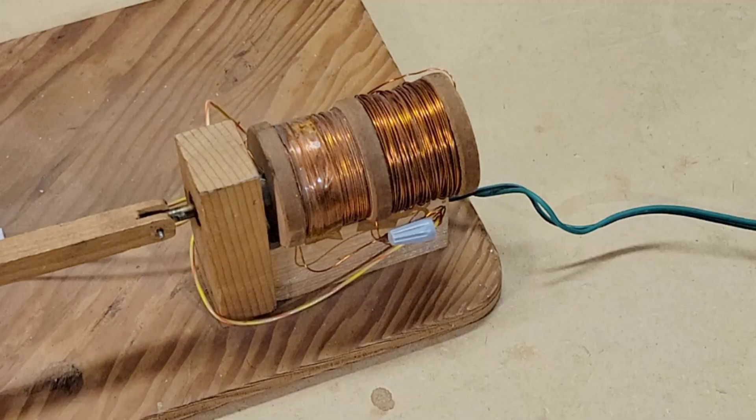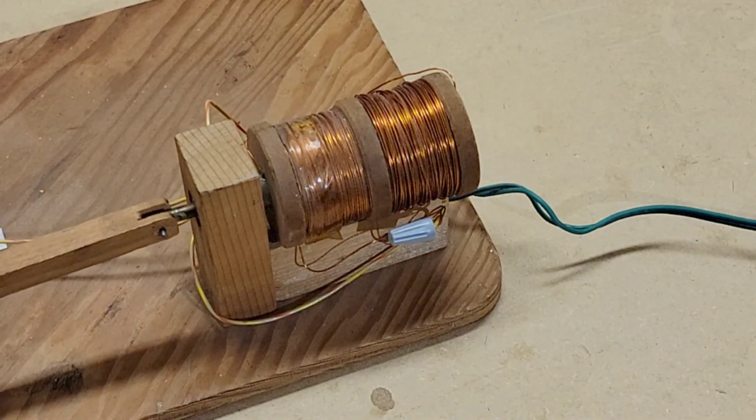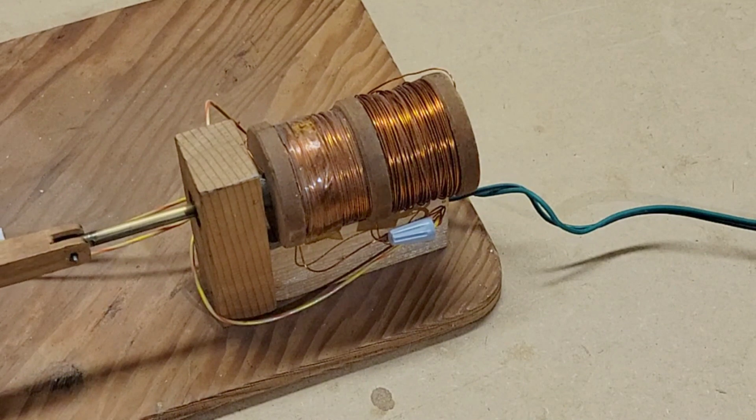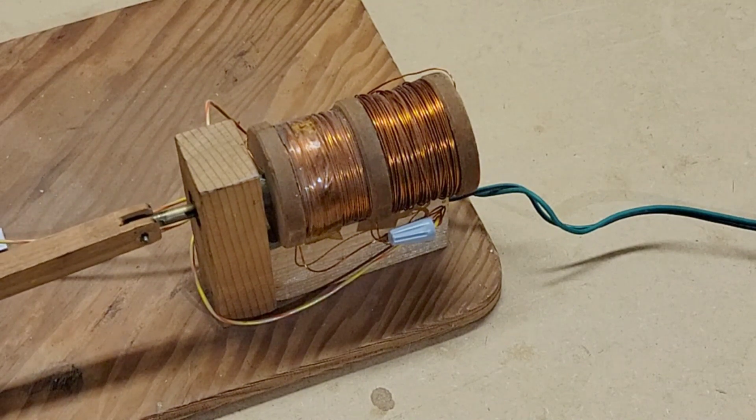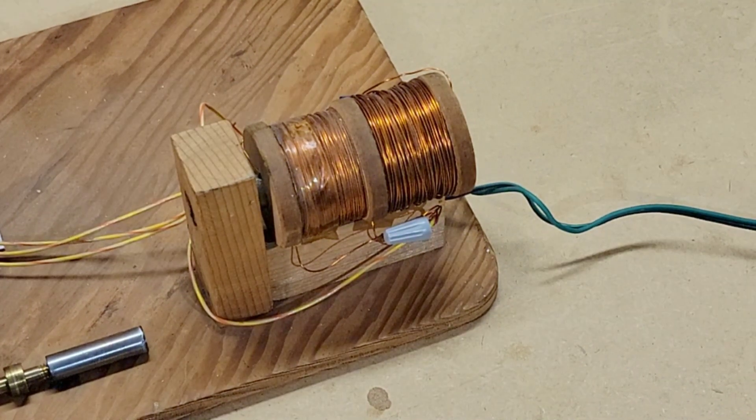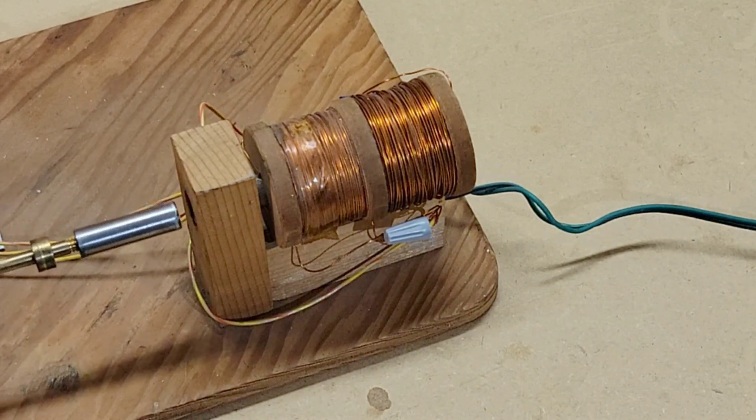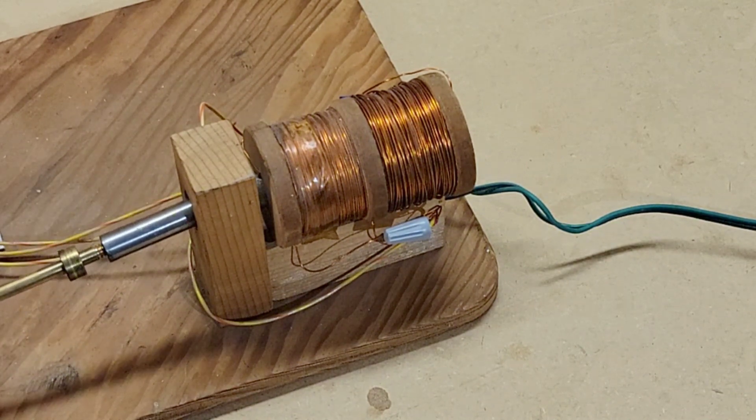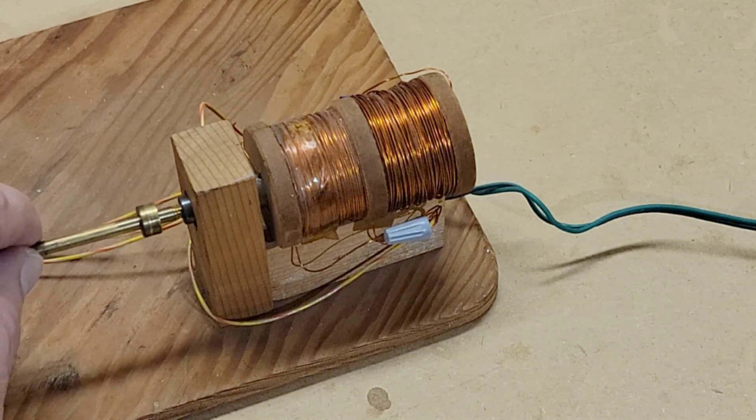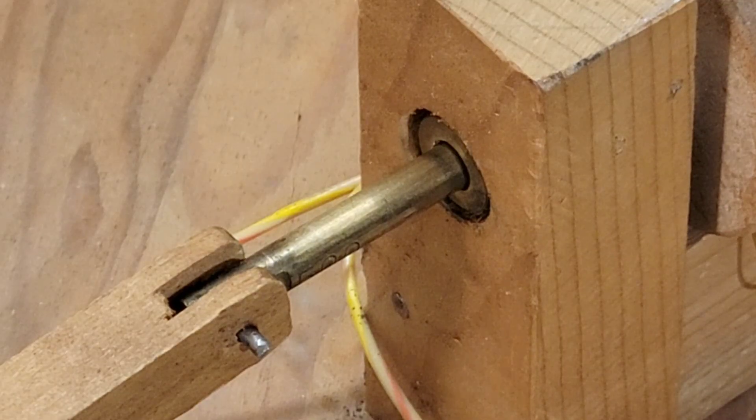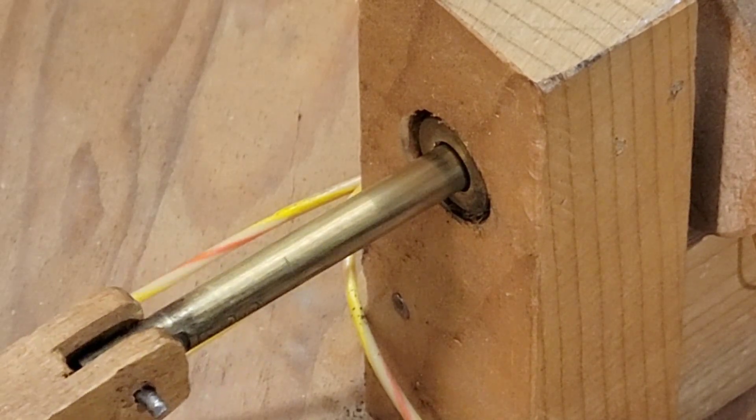There are two hand-wound coils of copper wire with an iron piston running down the center of the coils. The coils are alternately energized producing the in and out action of the piston.